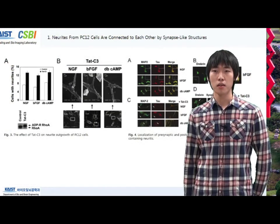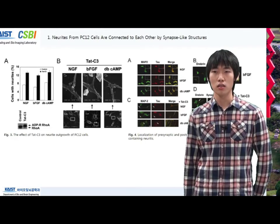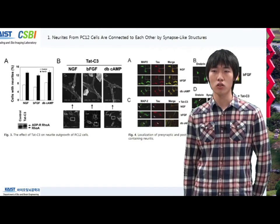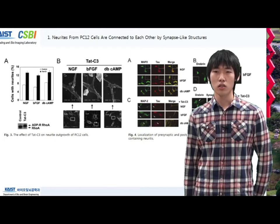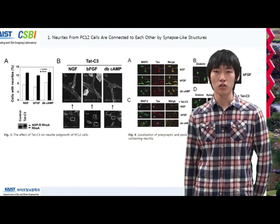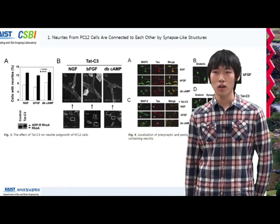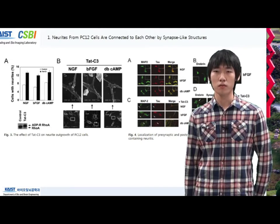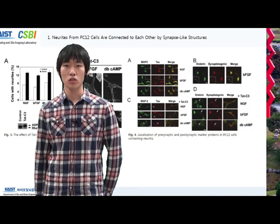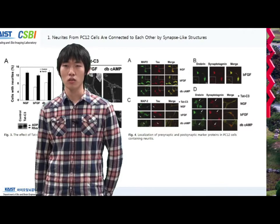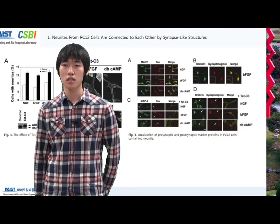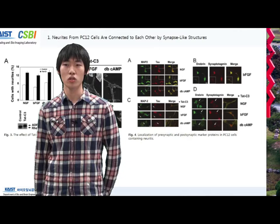Researchers then examined the effect of Tet-C3 toxin on neurite outgrowth of PC12 cells and on synapse-like structure formation between neurites. C3 toxin inhibits Rho GTPase, and Tet-peptide fused C3 toxin increased the extent of neurite outgrowth when cells were stimulated with NGF, bFGF, and cAMP. The localization of dendritic marker MAP2, axonal marker Tau1, post-synaptic marker Drebrin, and synaptic vesicle marker synaptotagmin was observed by immunocytochemistry.